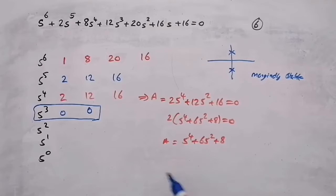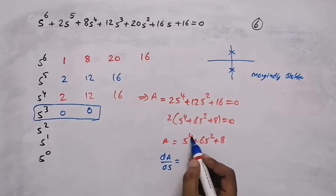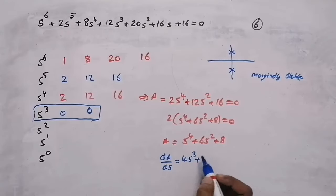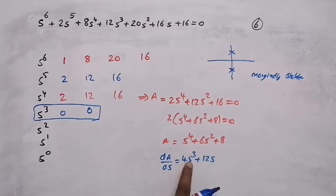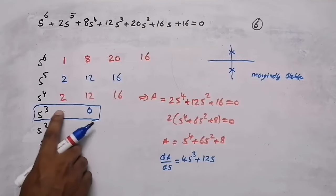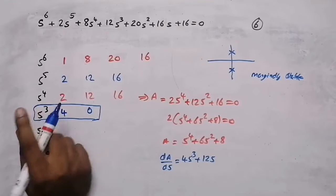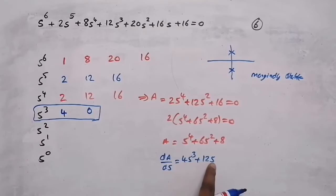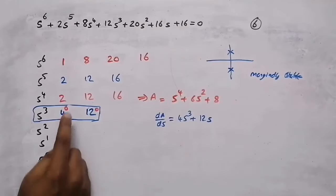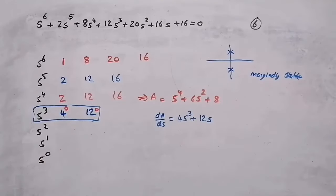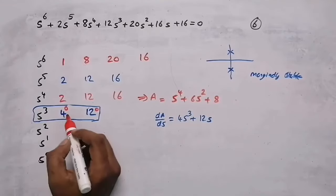Now differentiate the auxiliary equation with respect to s. Differentiating s^4 gives 4s^3, and differentiating s^2 gives 12s. So the differentiated auxiliary equation gives coefficients 4 near s^3 and 12 near s. We replace the zero values in that row with 4 and 12 respectively.